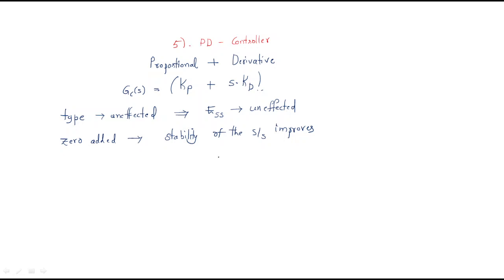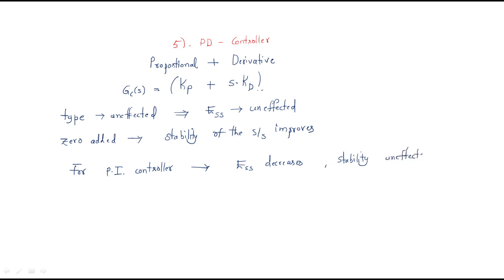Now we will give some conclusions comparing the PI controller and the PD controller. For the PI controller, the steady state error decreases — the PI controller generally decreases the steady state error. However, there is no effect on stability; stability is unaffected, meaning it improves steady state performance.